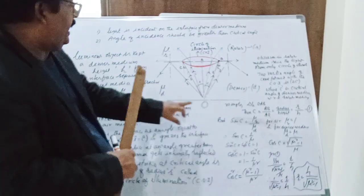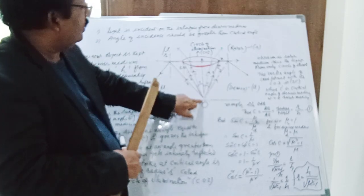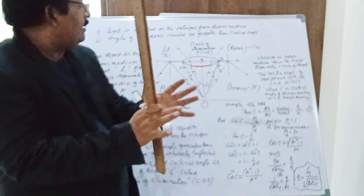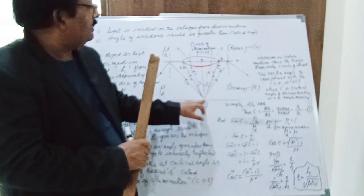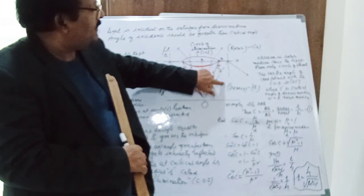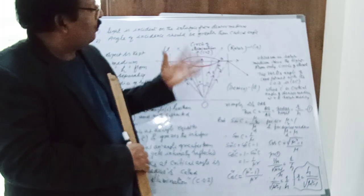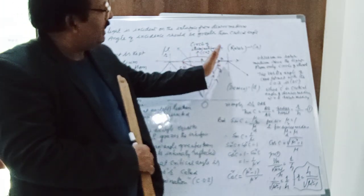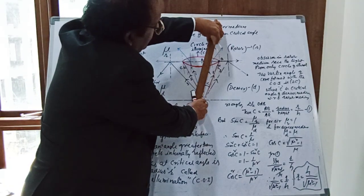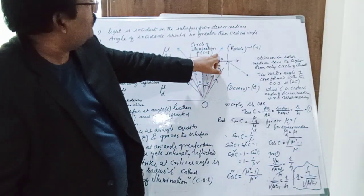A luminous body is submerged under water at a depth of H meters. Whenever a light ray is incident on the interface that separates two different media — a denser medium like water and a rarer medium like air — the refracted ray bends away from the normal from its original position.